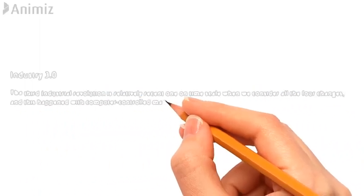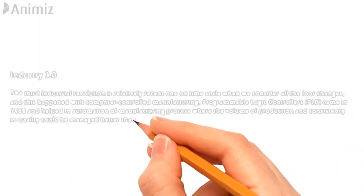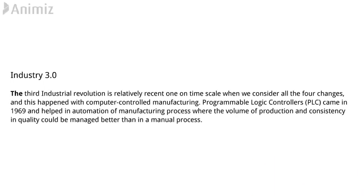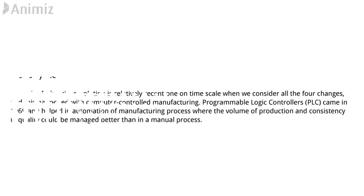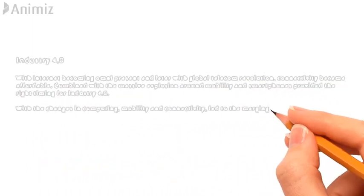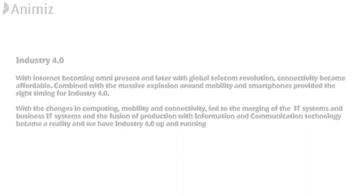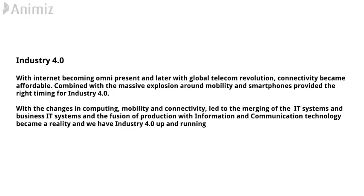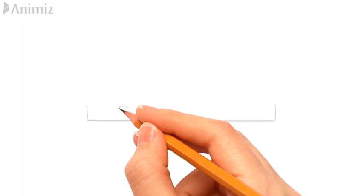Industry 3.0, the third industrial evolution, is a relatively recent one which happened around the late 1960s. This happened with computer-controlled manufacturing, programmable logical controllers, and helped the automation of manufacturing processes — where volume of production and consistency in quality could be managed better than a manual process. During the period of the 1960s to about late 2010, IT systems remained very confined to the interiors of factories and were disconnected from business IT systems.